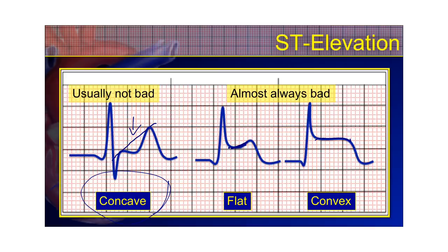Whenever you see a flat or convex ST elevation — sometimes called tombstones because you can literally write R-I-P there and draw some grass — that type of ST elevation is always pathological and more pathognomonic of a myocardial infarction.